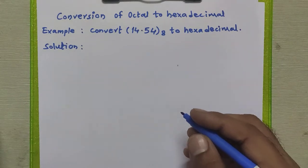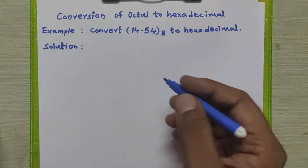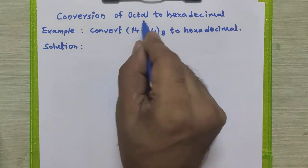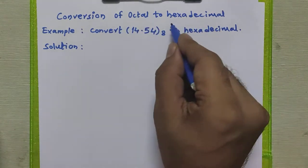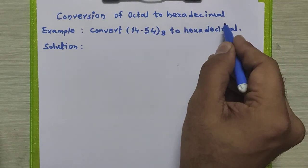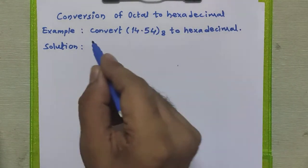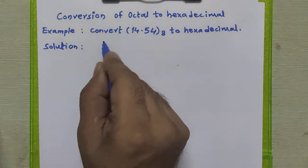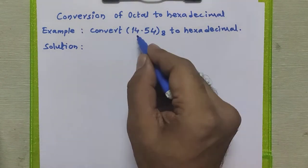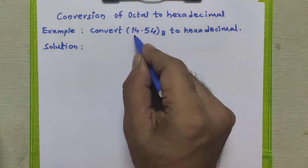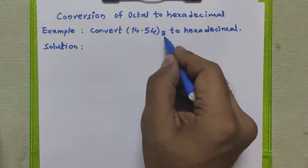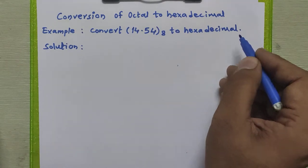Hello friends. In this tutorial we are going to study how to convert any octal number to hexadecimal number system. Now you see one example on it. We want to convert the number 14.54 octal to hexadecimal number system.